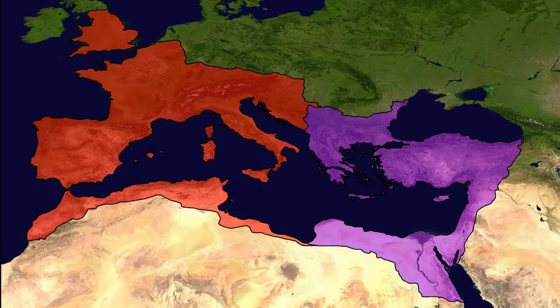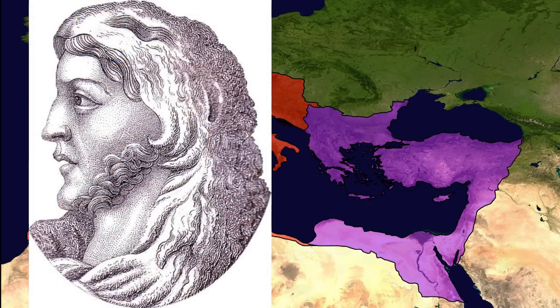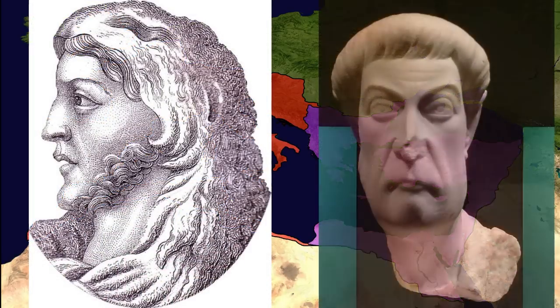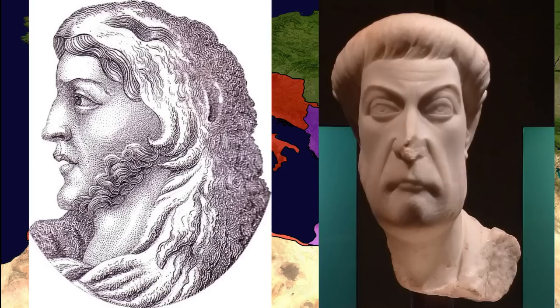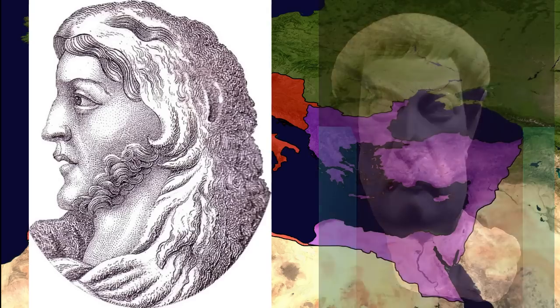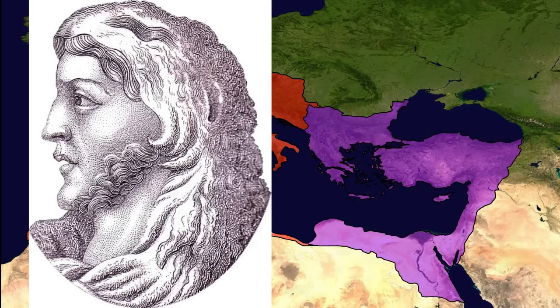Seeing Alaric as a useful ally against Stilicho, Eutropius, the de facto leader of the eastern court, made a deal with the Gothic king and enlisted him as an ally, giving him command in the eastern army and the ability to raise taxes to support his own forces. The deal lasted until the fall of Eutropius, but his successors had no interest in continuing the alliance with Alaric.